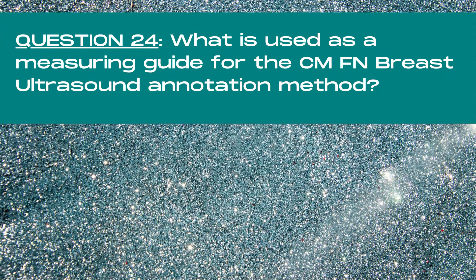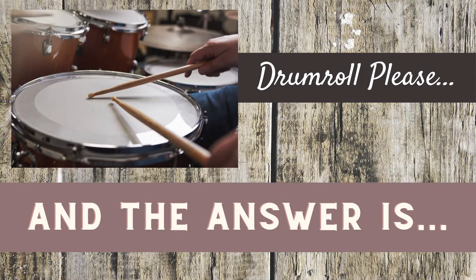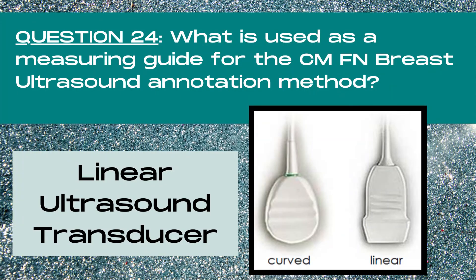Question 24. What is used as a measuring guide for the centimeters from nipple breast ultrasound annotation method? The answer is a linear ultrasound transducer. The linear transducer is placed next to the nipple in a radial plane and used as a measuring guide. The distance of a mass from the nipple is measured in 1 cm increments, with the average linear transducer measuring 5 cm across the top of the transducer.